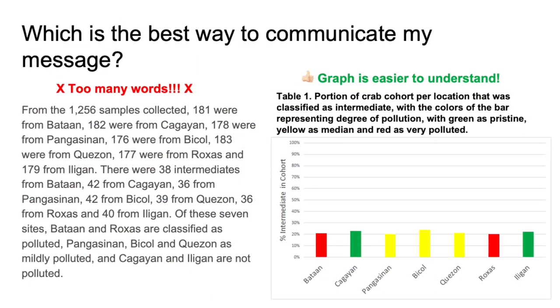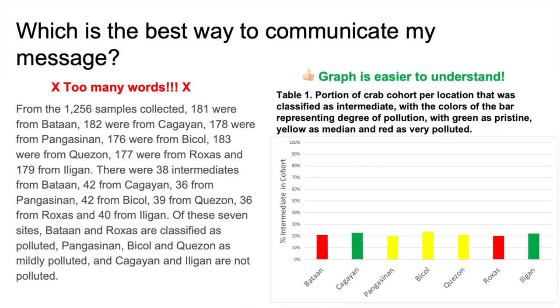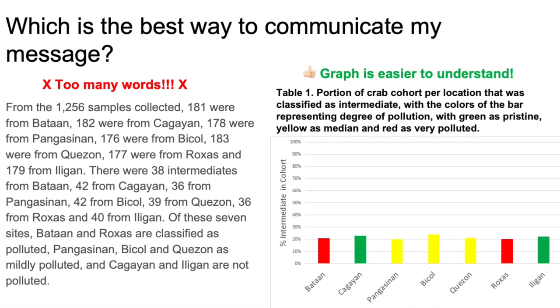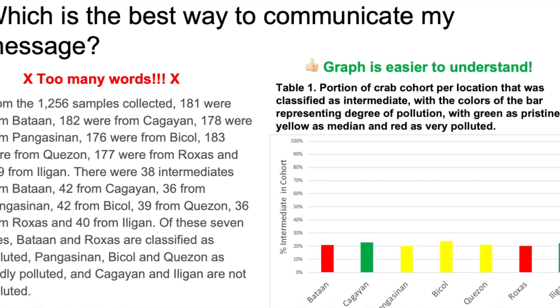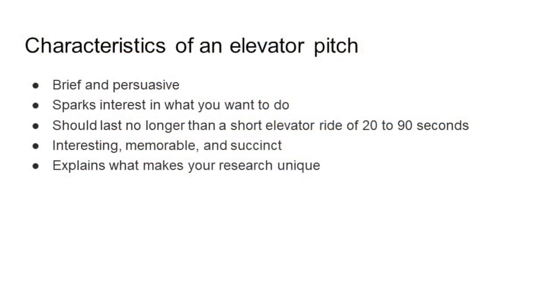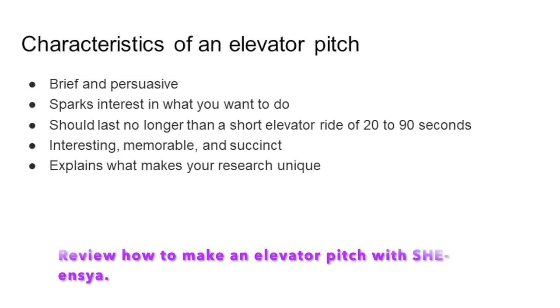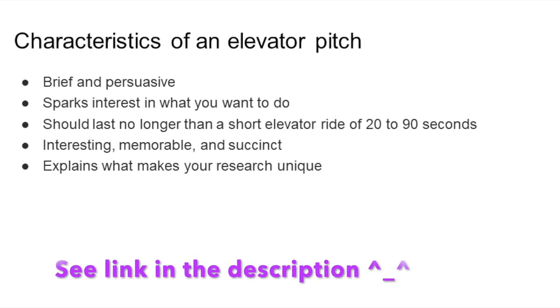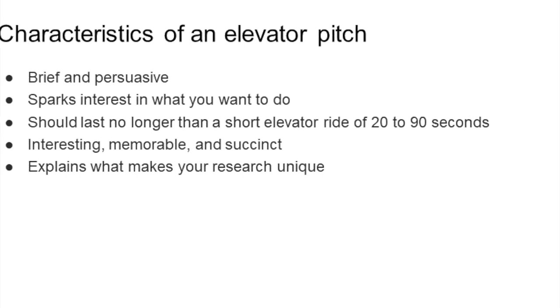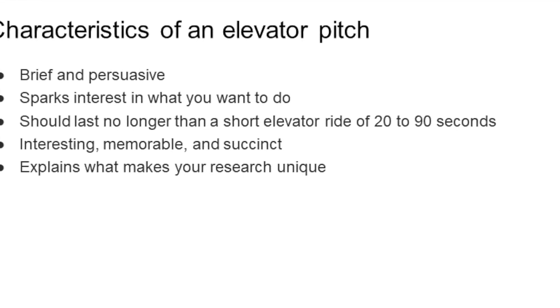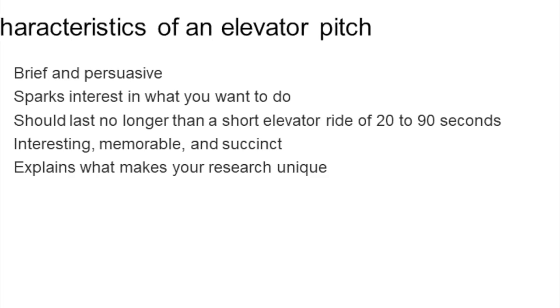The goal is to keep your poster simple and your text brief. A viewer should get what you're trying to say in 30 seconds. You can provide in-depth information through discussions or even a handout that you can give out. Once you have everything figured out, you can then work on the content of the elevator pitch that would accompany your poster. Remember the characteristics of an elevator pitch — it should be about 1 to 2 minutes long and memorable. It should complement your poster, but it is also your opportunity to put in things that are not in the poster, because as much as possible, you do not want to be redundant.